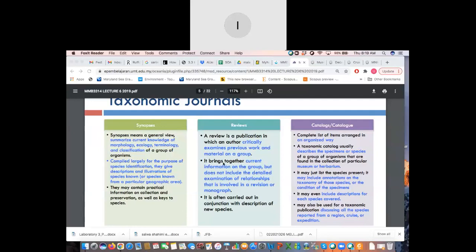So, it brings together current information on the group but does not include the detailed examination of relationships that involve in a revision or monograph. So, this is just a review. However, for revisions or monograph is even more detailed. And it's actually bigger. Sometimes monographs, I have done a monograph before, it can go up to even 100 over pages. It's very intense. It's like monographs is a book by itself technically. That's how detailed it is. Review is a second mix to being more gempa.